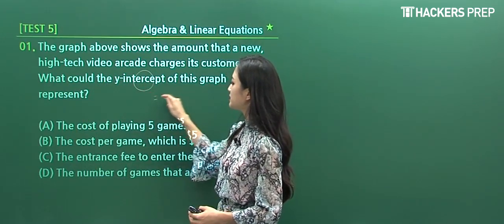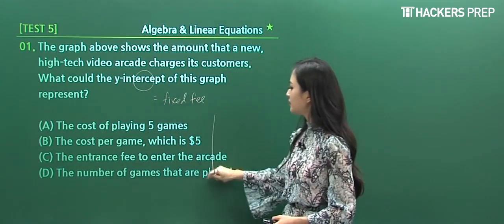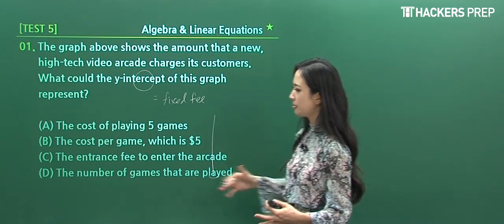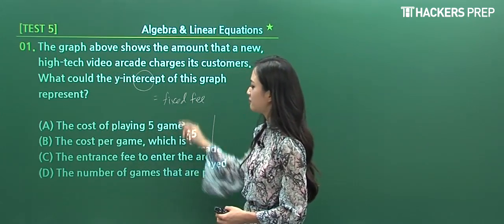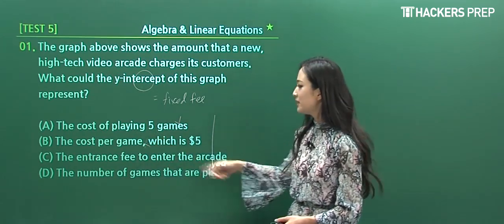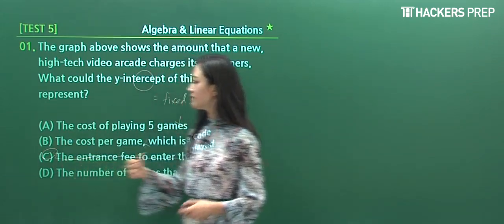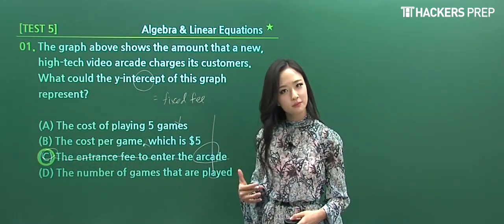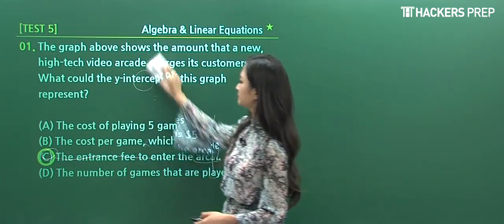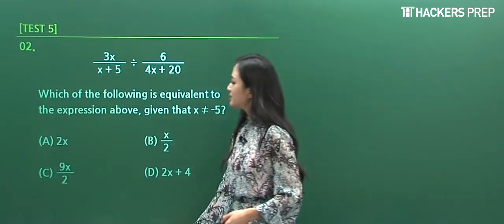Among the answer choices, when we're applying it to an arcade situation: is it the cost of playing five games? Cost per game? I think this refers to the slope. So the entrance fee to enter the arcade is the cost that is fixed. That's why we circle C. Let's go on to number two.